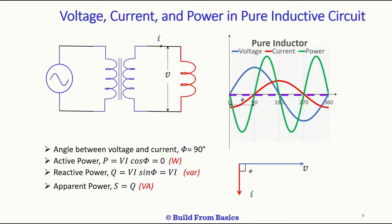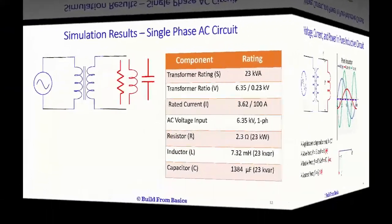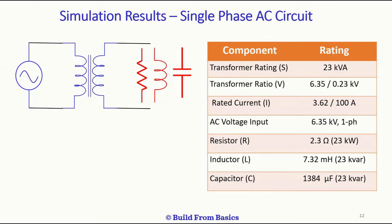The active power in an inductor is calculated as V·I·cos(φ), where V is the RMS voltage, I is the RMS current, and φ is the angle between instantaneous voltage and current — which is 90 degrees. So by equation, active power is zero. The reactive power is V·I·sin(φ); since sin(90°) = 1, reactive power equals V·I. Therefore, in a pure inductive circuit, the apparent power consists only of reactive power — there is no active power, so S equals Q.